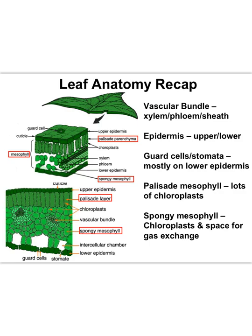That was a lot of information very quickly, so let's take a minute to catch our breath. Plant leaves have a lot going on. The vascular bundle in a leaf includes the xylem and the phloem transporting water and sugar, and the bundle sheath holding it all together. Plants also have an upper and lower epidermis — especially the lower epidermis — which has gaps called stomata that bring in carbon dioxide and let out oxygen and water vapor, flanked by specialized guard cells that open and close the stomata.